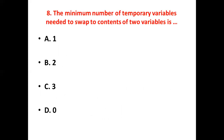Eighth bit. The minimum number of temporary variables needed to swap the content of two variables is dash. Option A, Option B, Option C, Option D: Zero. Answer: Option D, Zero.